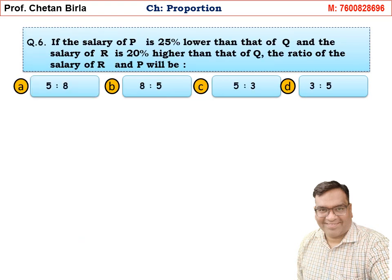Question 6: If the salary of P is 25% lower than that of Q, and the salary of R is 20% higher than that of Q, find the ratio of the salary of R and P. There are 3 persons: P, Q, and R. We need to find the salary ratio of R to P.